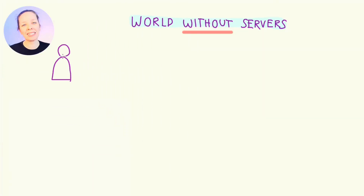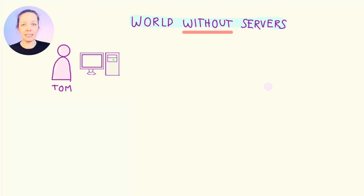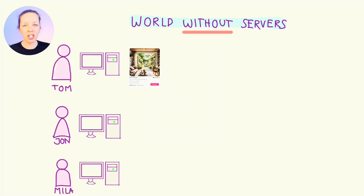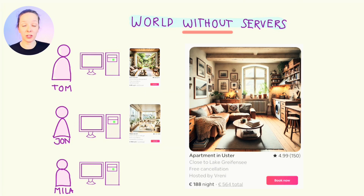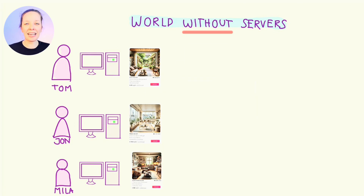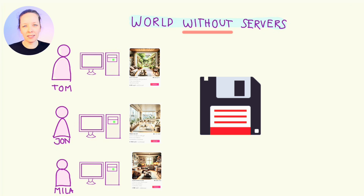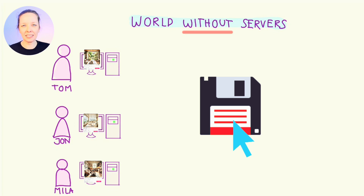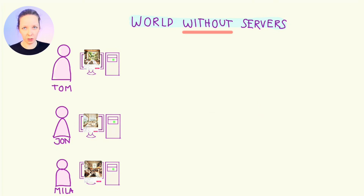So Tom wants to rent out his flat in Zurich on Airbnb. He does his description, takes pictures and so on. John and Mila do the same thing with their apartments in Zurich. But here's a catch — they will only save their apartment information on their local machine. They're not going to put it on the internet. They will just save it locally on their desktop.